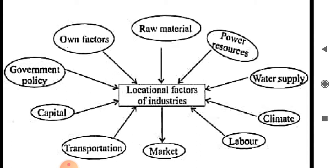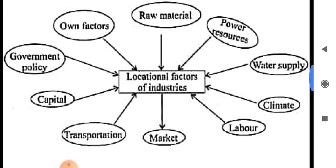Limestone is available from the Gangpur region of Odisha. Next point: availability of power. Power is also obtained from the multipurpose project of the Damodar Valley Corporation, known as DVC, on the river Damodar.